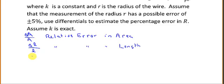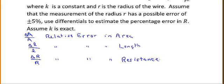Applying this here: the error in the resistance is delta R (capital R) divided by capital R itself — that is the relative error in resistance. And the relative error in the radius would be delta r (lowercase r) divided by lowercase r, representing the radius.